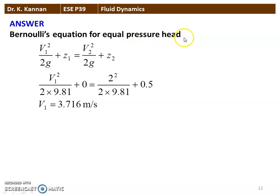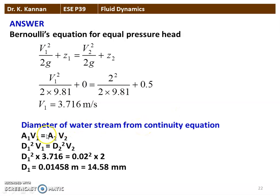Bernoulli's equation for equal pressure head: V1²/2G + Z1 = V2²/2G + Z2. With Z1 as datum = 0, solving: 2²/2G + 0.5 gives velocity V2 = 3.716 meters per second. From the continuity equation A1V1 = A2V2, with pi/4 cancelling: D1² × 3.716 = 0.02² × 2. Solving, diameter D2 = 0.01458 meters, which is 14.58 millimeters.